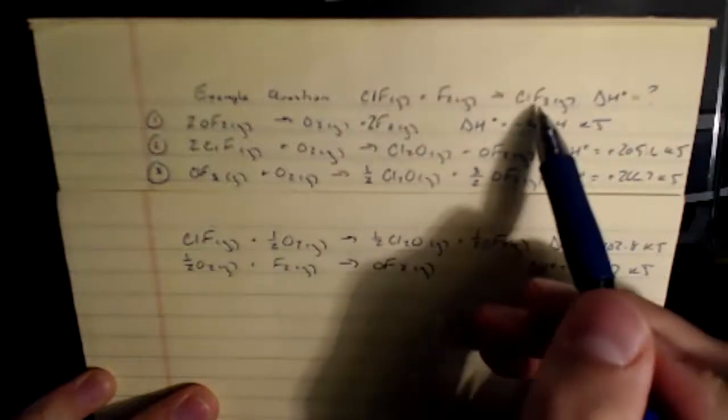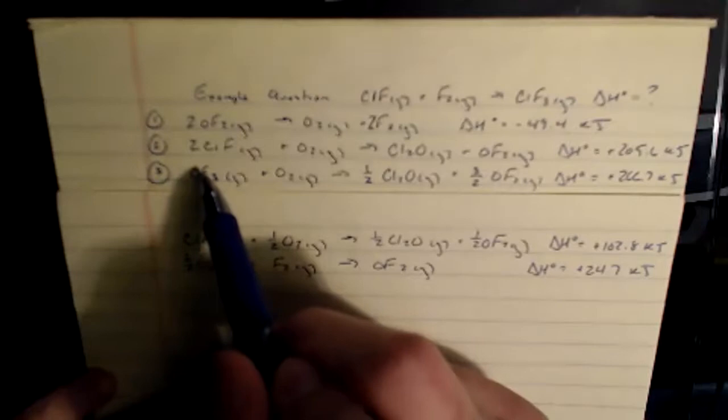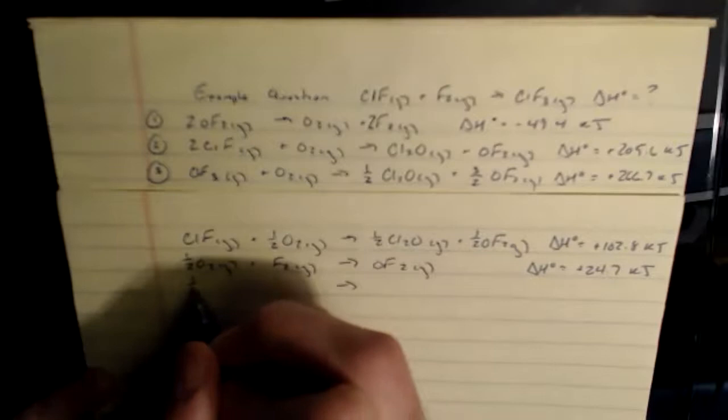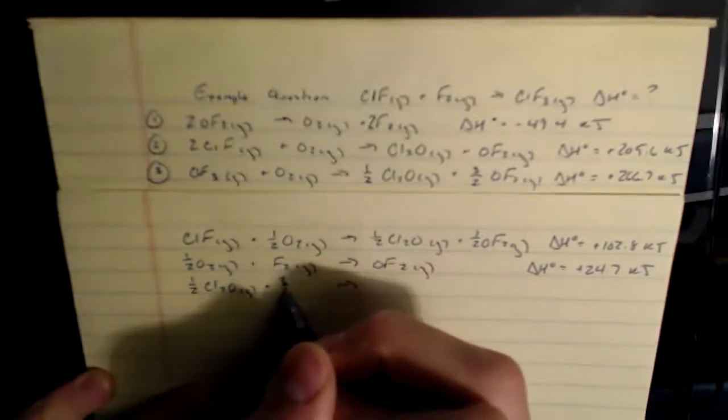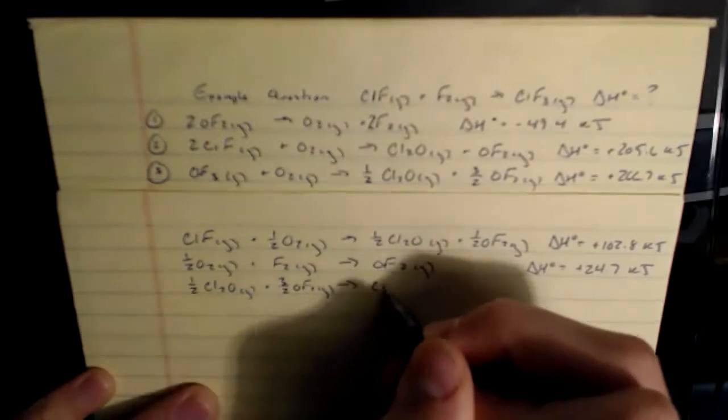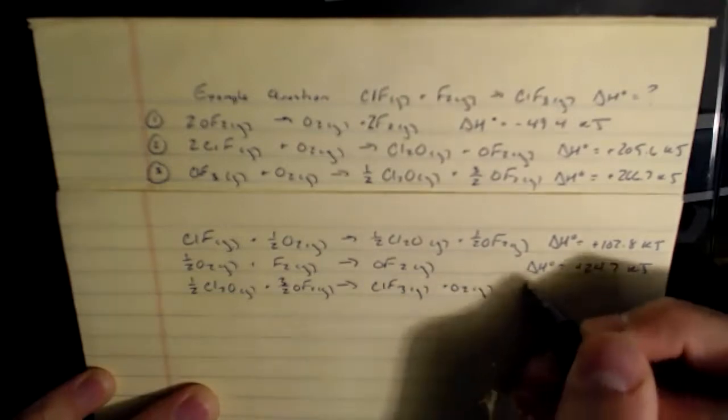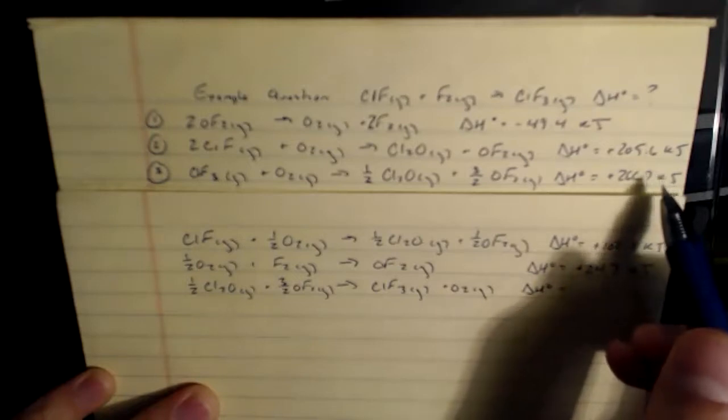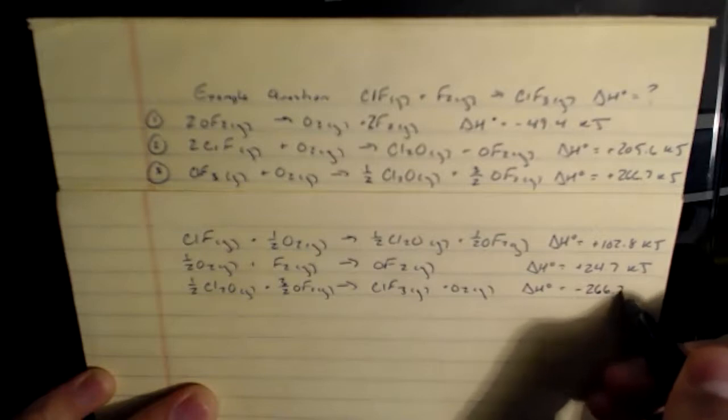Lastly, I'll target my ClF3, which I want as a product. It only appears in reaction 3 as a reactant, so I have to flip reaction 3. Half a Cl2O gas, plus three halves of OF2 gas, going to ClF3 gas plus O2 gas. My delta H value, which was positive 266.7 before, now becomes negative 266.7.